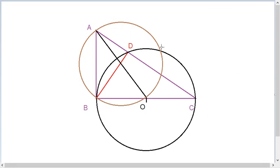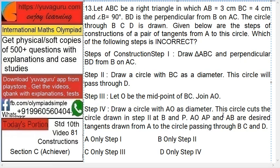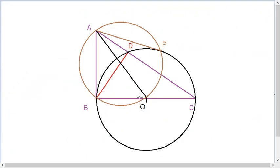Draw a circle with AO as a diameter. This circle cuts the circle drawn in step 2 at B and P. So AO, AP, and AB are the desired tangents from A to the circle passing through B, C, and D.